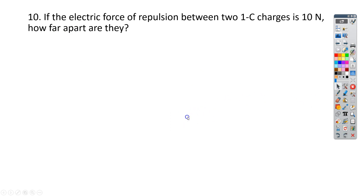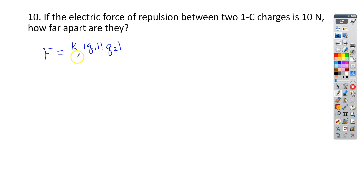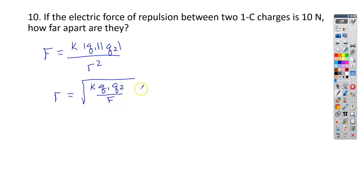Let's go ahead and take a look at number 10. Number 10 says: if the electric force of repulsion between two 1-coulomb charges is 10 newtons, how far apart are they? This is a Coulomb's law problem. F equals k times the absolute value of q1 times the absolute value of q2, all divided by the distance squared. Let's solve this for r: r equals the square root of k times q1 times q2 all over the force. That's equal to the square root of 9 times 10 to the 9th — that's our value for k.